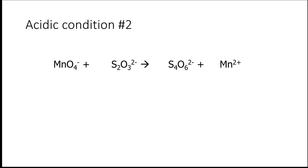Let's do another example, still in acidic condition. You can do this problem together with me — just pause the video when necessary. Let's start by balancing the manganese and sulfur atoms first. Next, assign the oxidation states of the species that undergo reduction and oxidation. Manganese is +7 to +2, whereas sulfur goes from an average of +2 to an average of +2.5. This time we have a total of 4 sulfur atoms on either side.